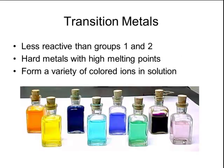The d block contains the transition metals. These metals are slightly less reactive than groups 1 and 2, and they are also harder and have higher melting points than the s block. What's interesting about the transition metals is they form a variety of colored ions when placed into solutions — most of the brightly colored solutions we use in lab are because of the transition metals of the d block.